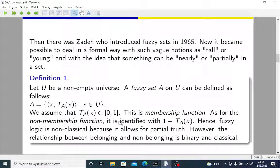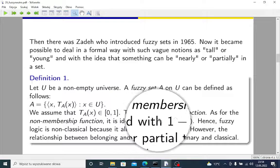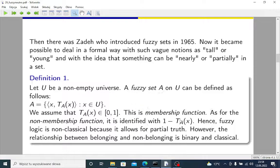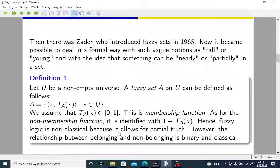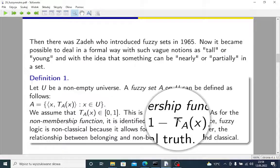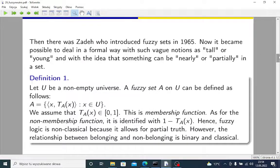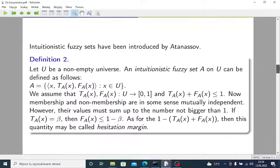As for the non-membership function, as we can read here, it's defined as 1 minus truth function. Fuzzy logic is non-classical in some sense, because it allows for partial truth. However, this relationship between belonging and non-belonging is binary and classical. This is here.